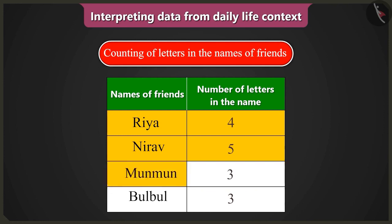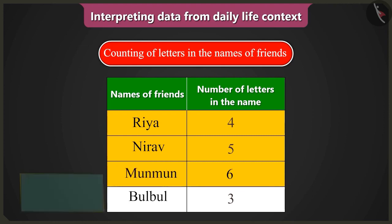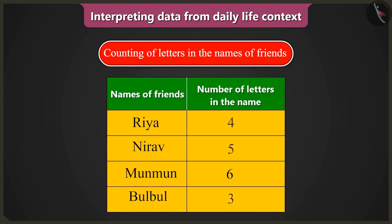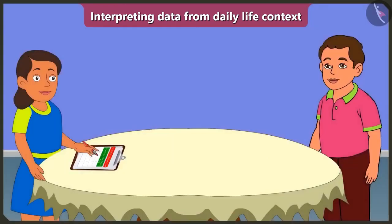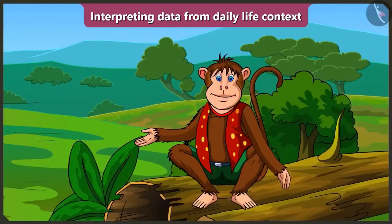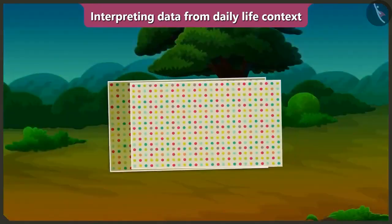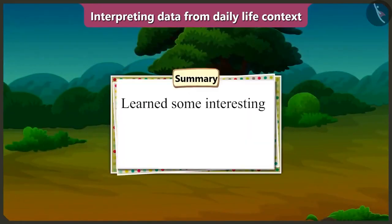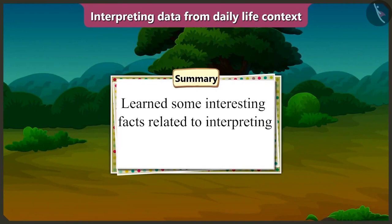You counted M-U-N in Munmun, so you wrote three letters. But these three letters come two times, so that is a total of six letters. Oh yes, I have to count all the letters that come in the name — no matter how many times they come. So the number of letters in Munmun will be six. Now tell me how many letters are there in the name Bulbul? There are a total of six letters, not three.